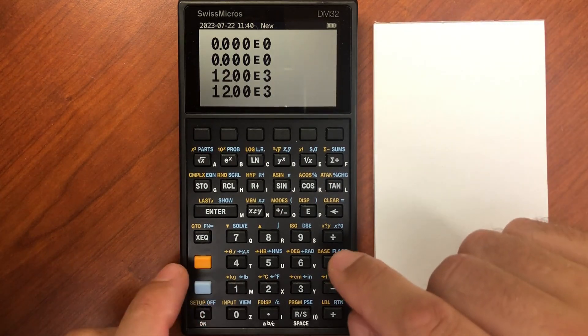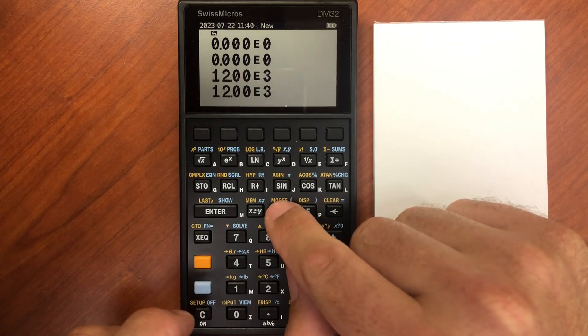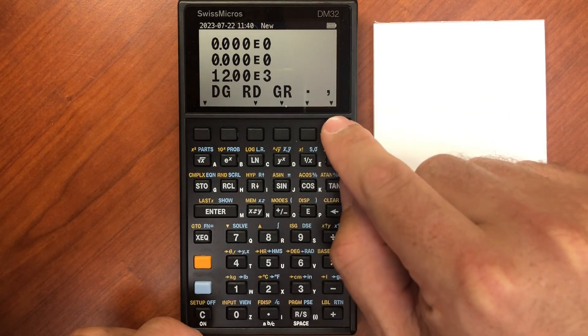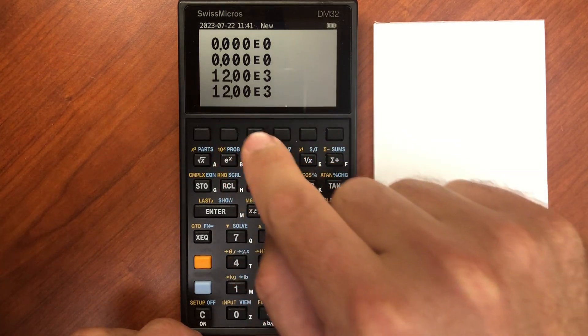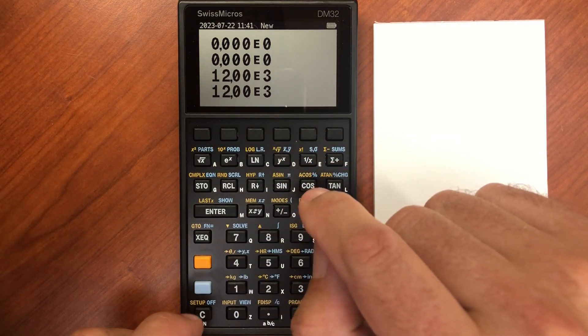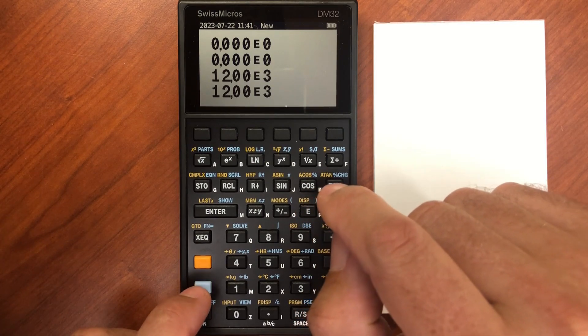Another display option you have here is if you go into modes, you can change your separator to a comma or a decimal. I know in some other countries they use a comma as the separator rather than a period.